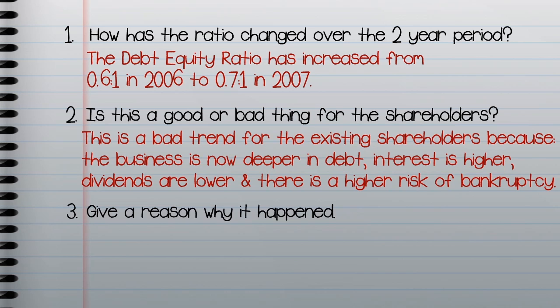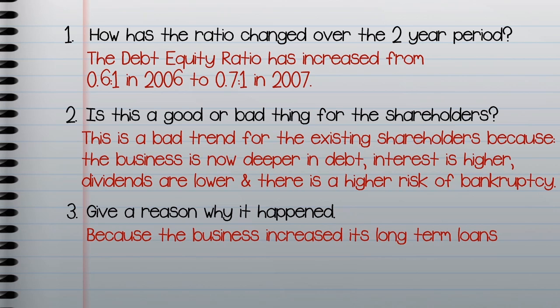Your third comment could be a reason why this has happened. Our debt equity ratio has increased because the business has increased its loans from €300,000 to €364,000.